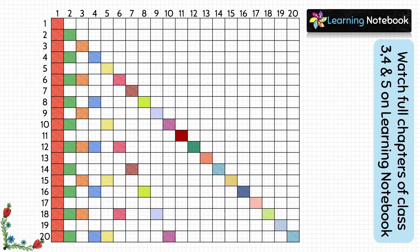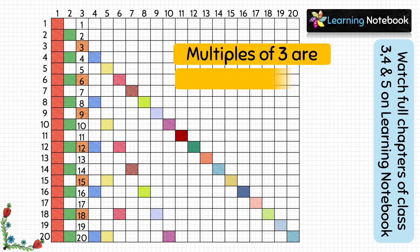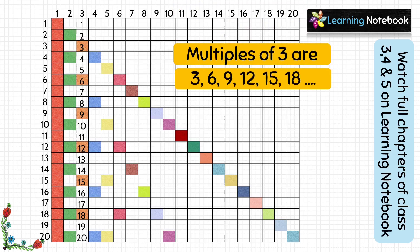Next, to find the multiples of 3, look at column 3. The boxes which are colored here are 3, 6, 9, 12, 15, 18 and so on. So these are the multiples of 3.